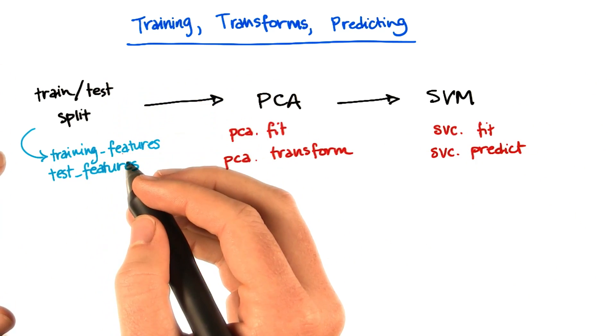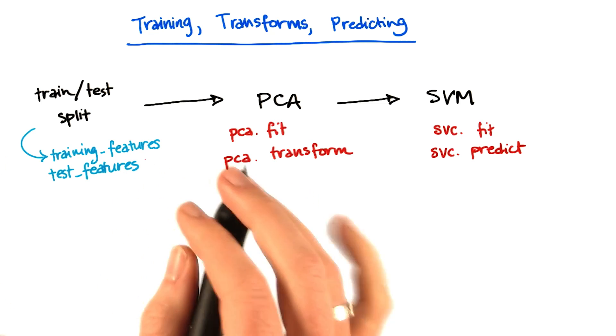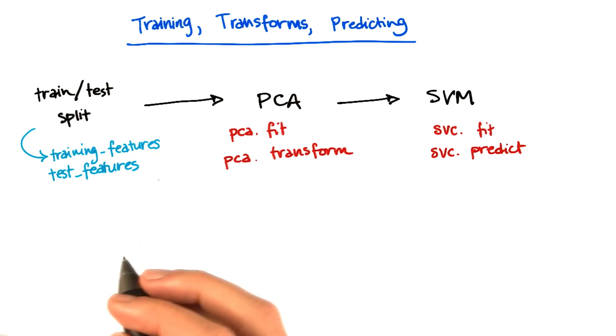So let's suppose that coming out of the training testing split, we have two different sets of features. We're only going to look at the features in this quiz. We have what's called training features and test features. The first thing you want to do is apply principal components.